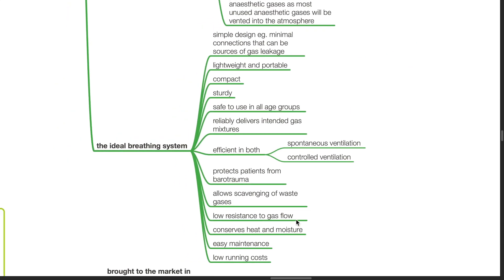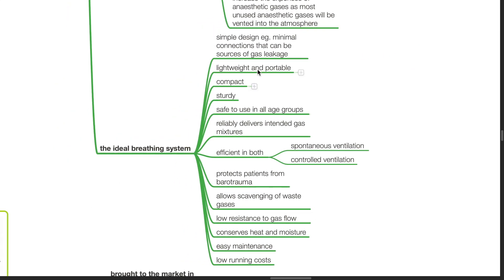Features of the ideal breathing system. Simple design, minimal connections that can be sources of gas leakage. Lightweight and portable, compact, sturdy, safe to use in all age groups. Reliably delivers intended gas mixtures. Efficient in both spontaneous and controlled ventilation. Protects the patient from barotrauma. Allows scavenging of waste gases. Has low resistance to gas flow. Conserves heat and moisture. Has easy maintenance and low running costs.